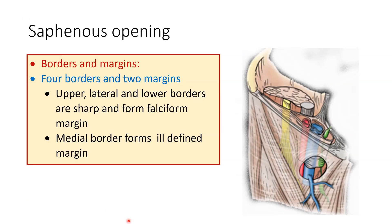The saphenous opening has four borders: the upper border, the lateral border, the lower border, and the medial border. Of these four, the upper, lateral, and lower borders together form a sharp margin known as the falciform margin. The medial border forms an ill-defined margin. So there are two margins: the falciform margin and the ill-defined medial border.